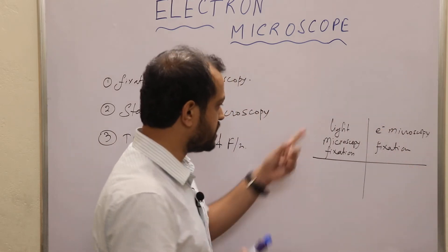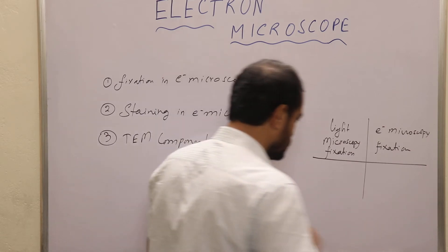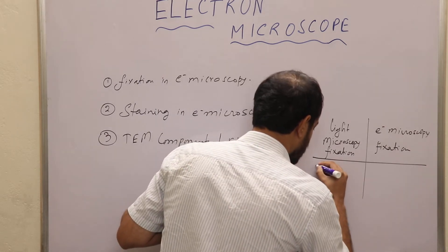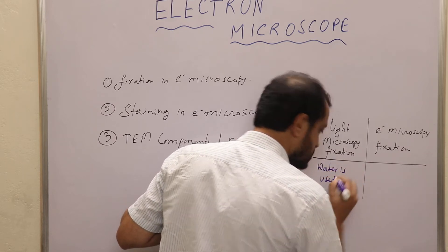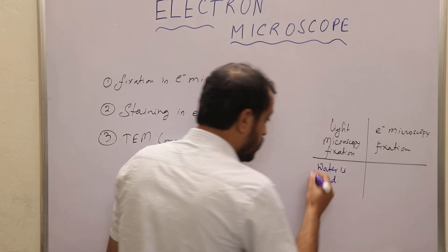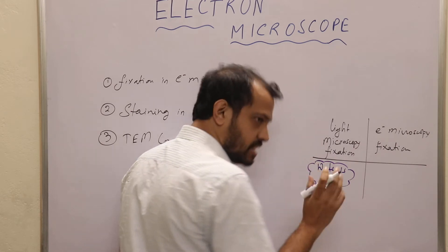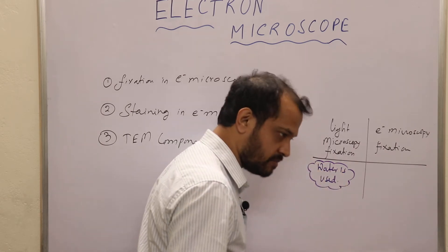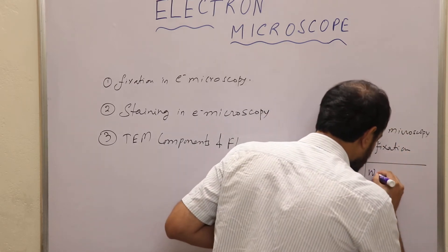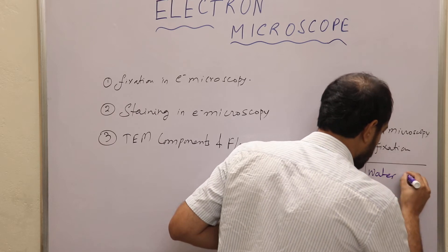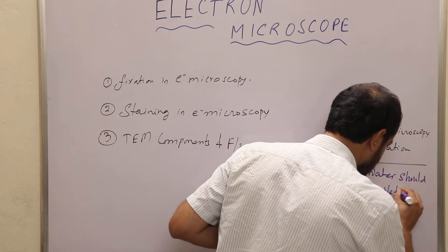The basic difference between light microscopy fixation and electron microscopy fixation is this: in light microscopy fixation, water is used and water is permitted. That means we can use water, and if some amount of water stays in the sample there is no harm. But in electron microscopy fixation, water should be completely removed.